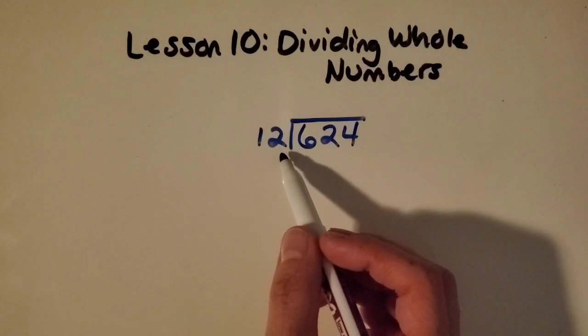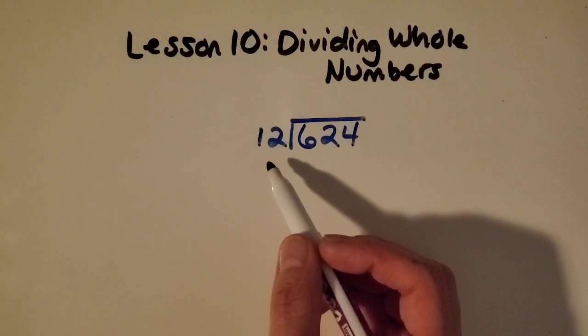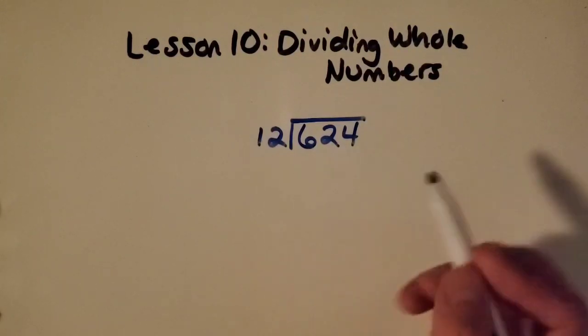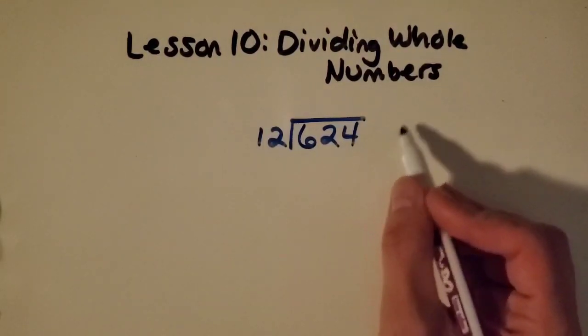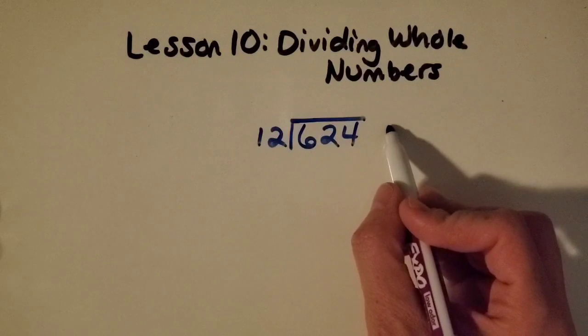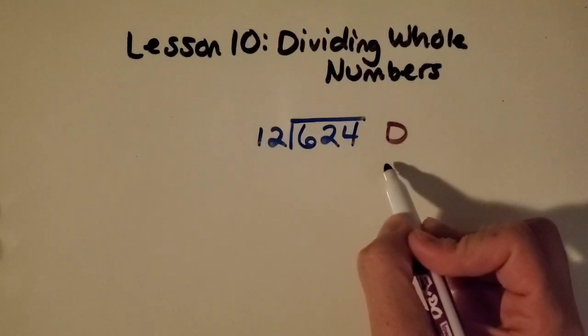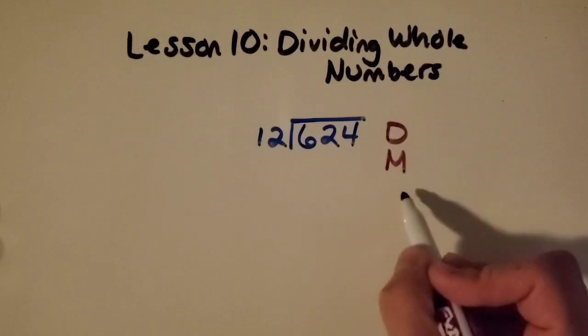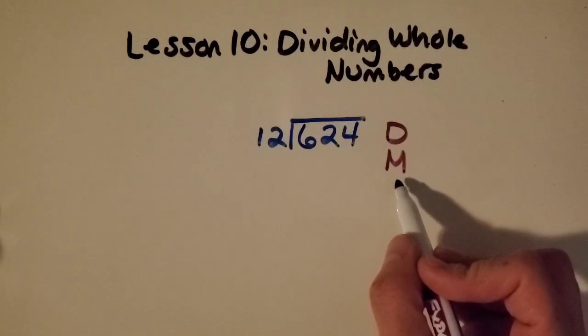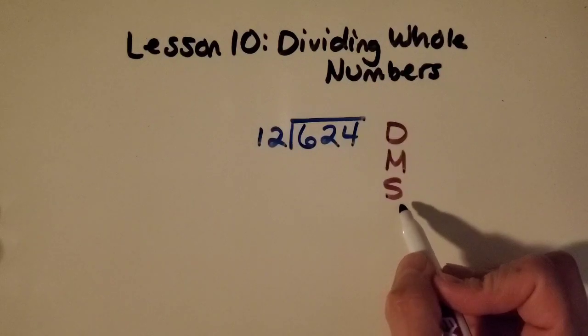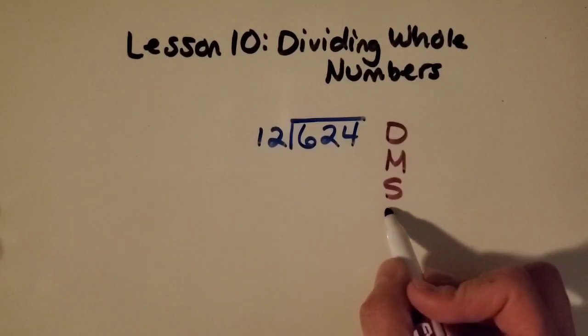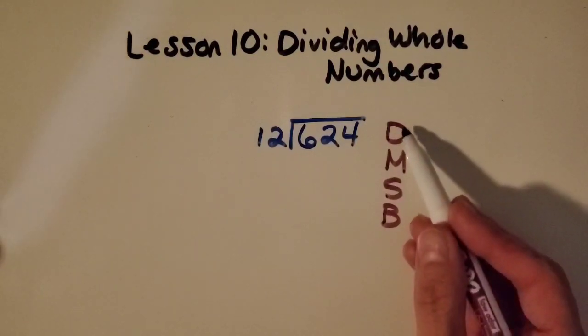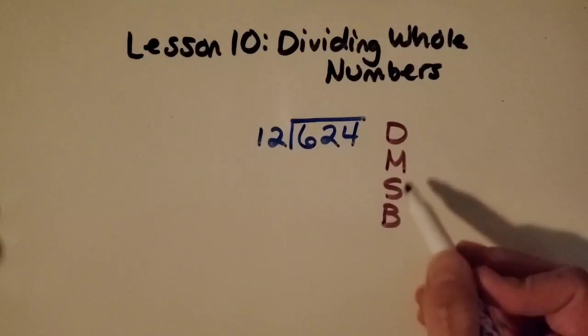I'm going to show you a couple of things that can really help guide you through division. I'm going to start with a strategy that I put on the side of my division problem that I like to call Daddy, which stands for division, Mother, which stands for multiplication, Sister, which stands for subtract, and Brother, which stands for bring down. So it kind of helps me remember the steps in order.